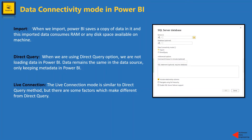In Power BI we get three options to connect to any data source: import, direct query, and live connection. When we opt for import, Power BI saves a copy of data within it, and it consumes RAM or disk space available on our machine. When we create visualizations using that imported data, it consumes the resources available on our machine. Power BI has an inbuilt engine which will compress the data and boost performance, however space and RAM will still be consumed from our machine.